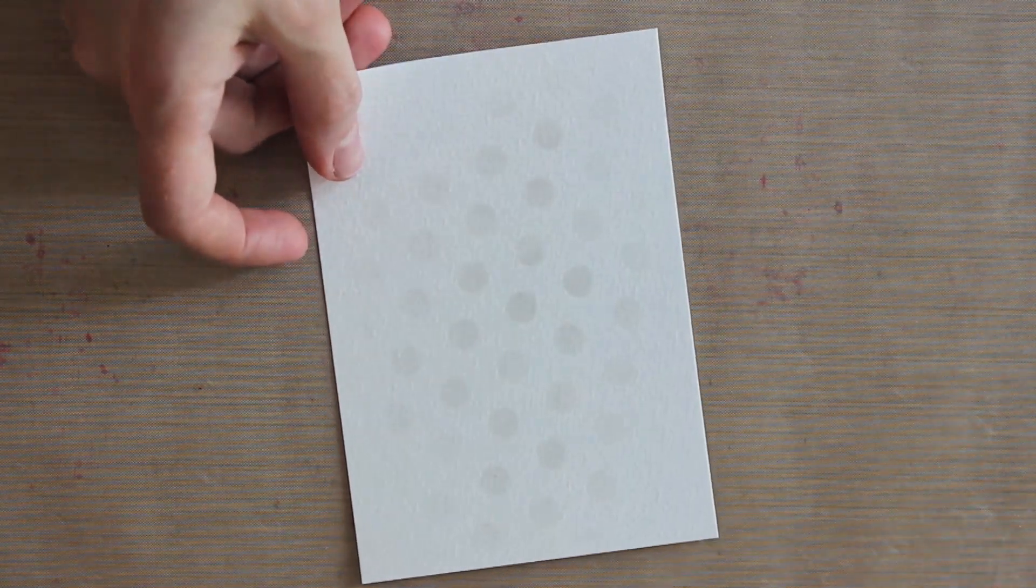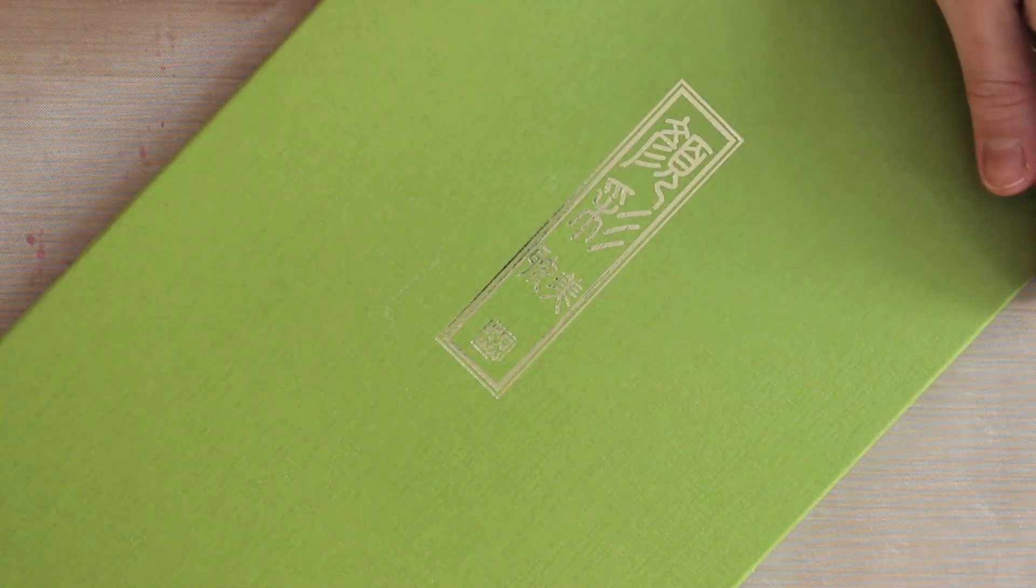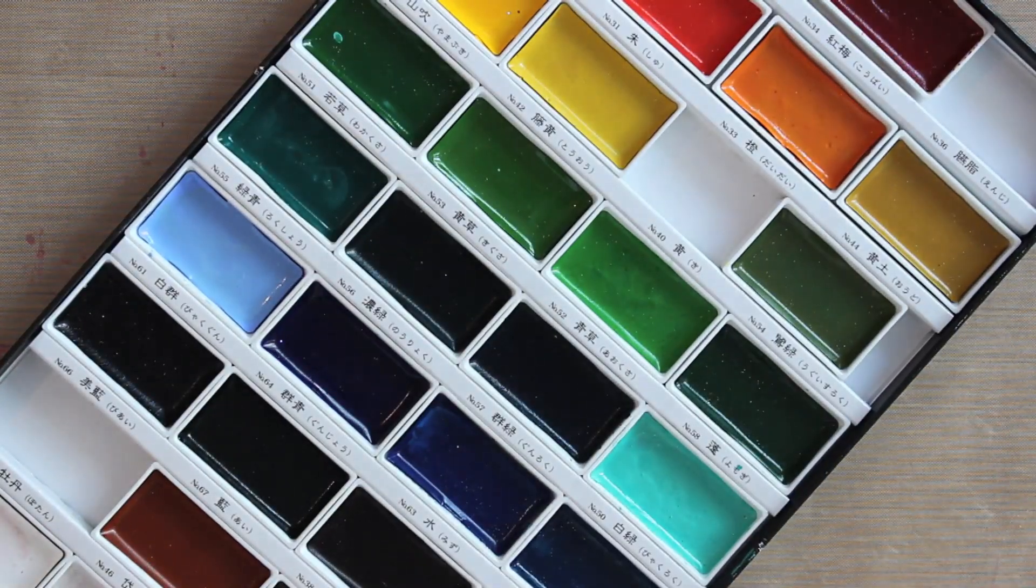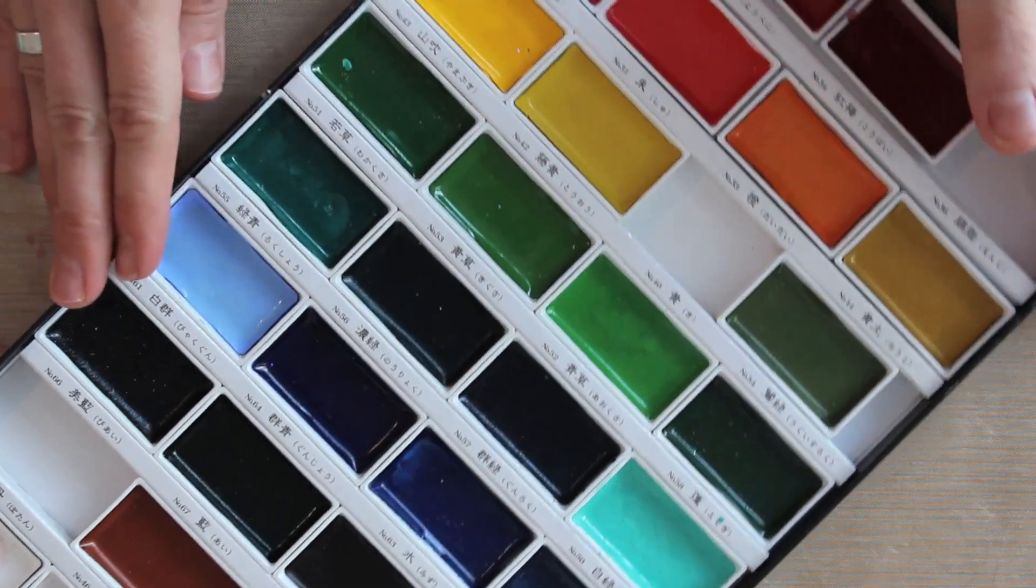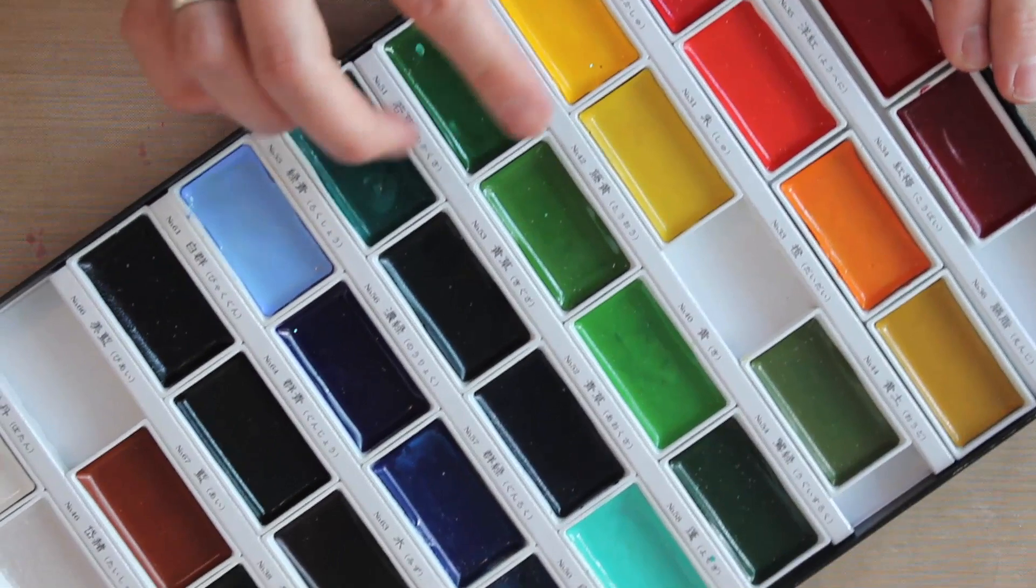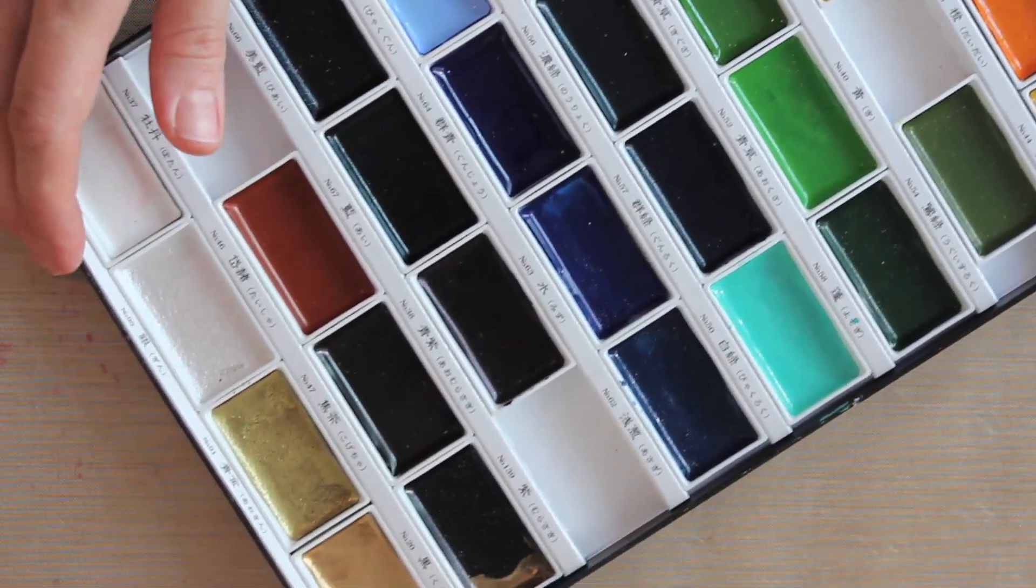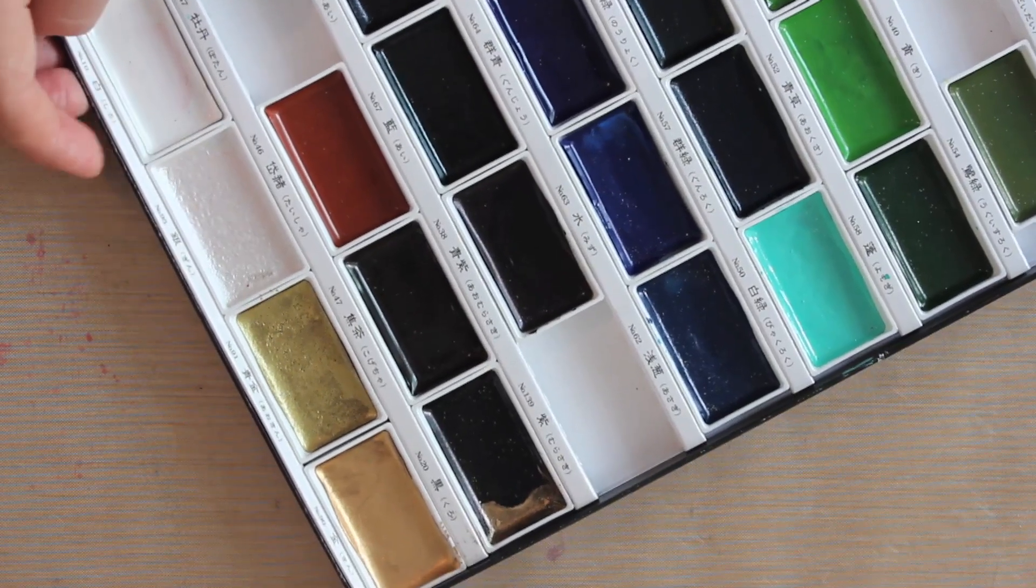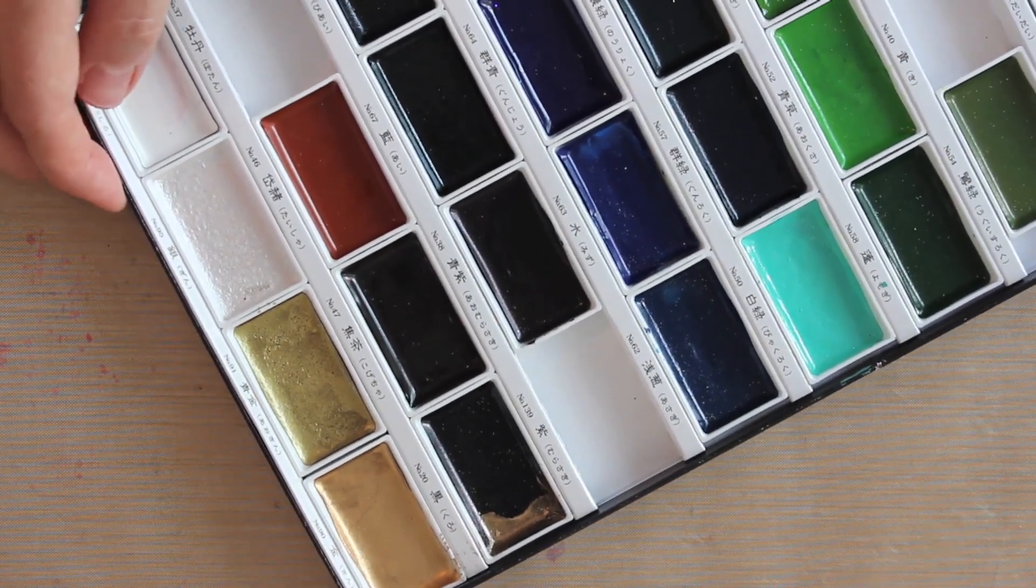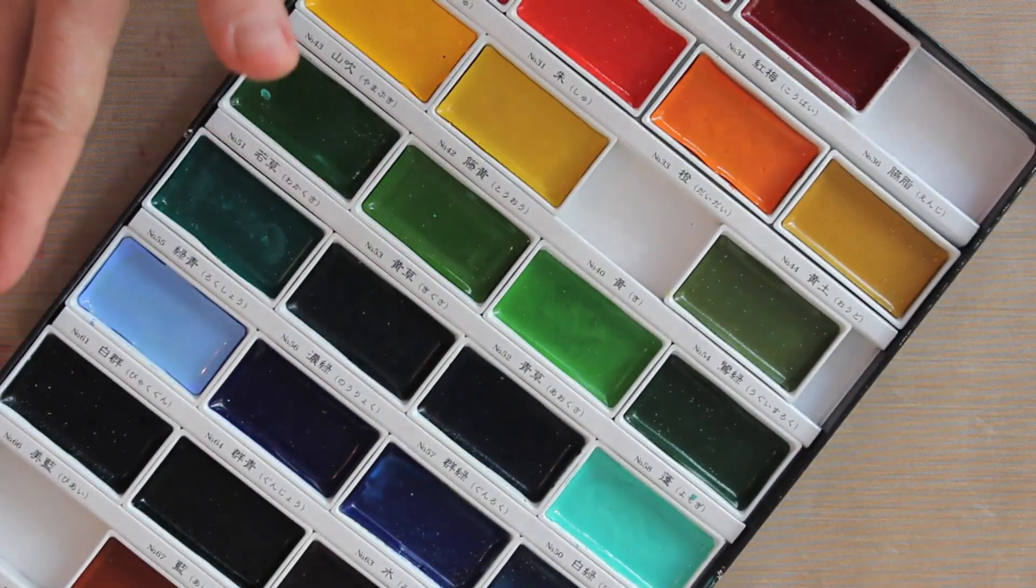I wanted to show you the watercolor set that I'm working with. This is from Kuretake, the Gansai Tambi watercolor set, and it is absolutely delicious. I've got 36 different colors, everything from beautiful rich reds to really cheerful yellows, some greens, lots of beautiful blues and violets, all the way down to white, pearl, gold, and copper. It's a really nice full set and one that I'm using a lot.